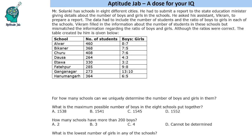Hello everyone, welcome to AptitudeJab. This set says that Mr. Solangi has a school in 8 different cities. He had to submit a report to the state education minister giving details about the number of boys and girls in the schools, and so for that he asked his assistant to prepare a report. The data had to include the number of students and the ratio of boys to girls in each of the schools.